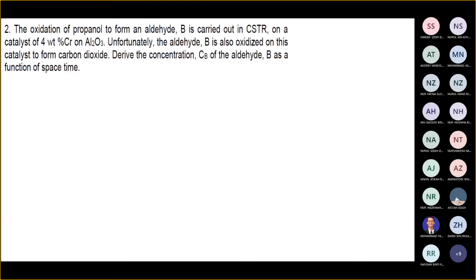Alright, so number two. The oxidation of propanol to form an aldehyde B is carried out in a CSTR on a catalyst of 4% CR on aluminium oxide.